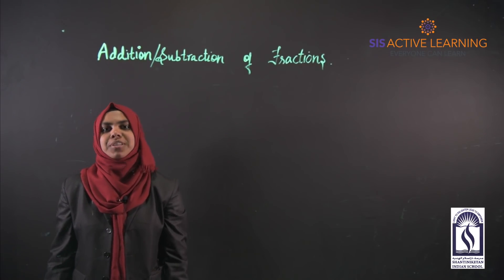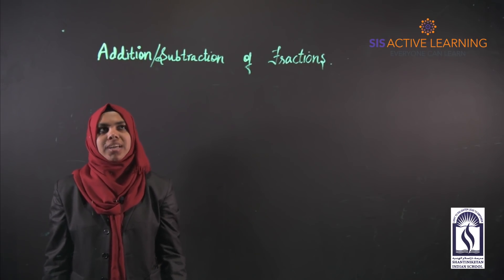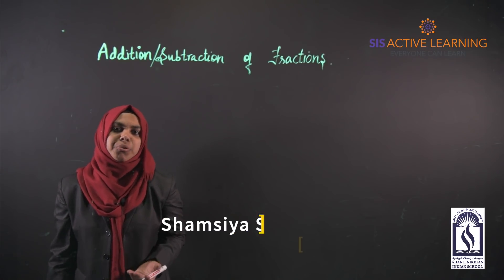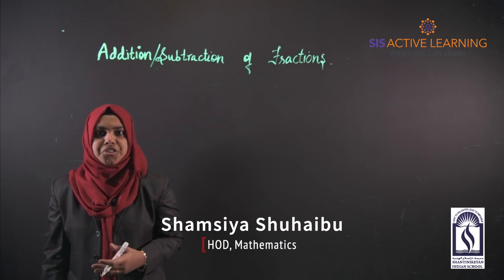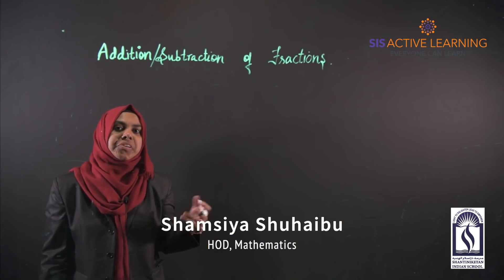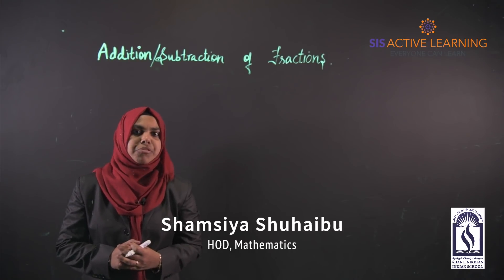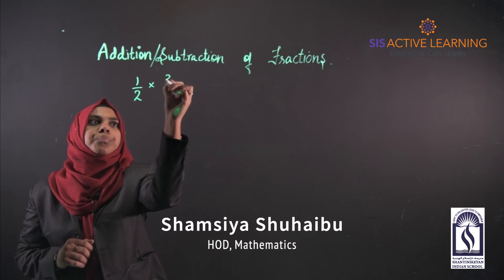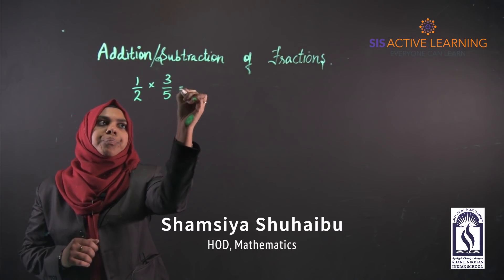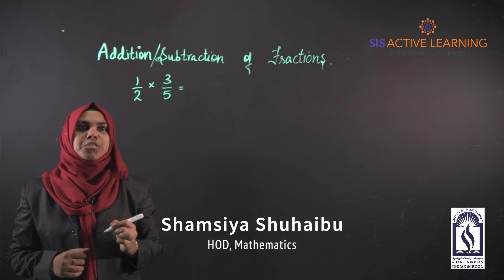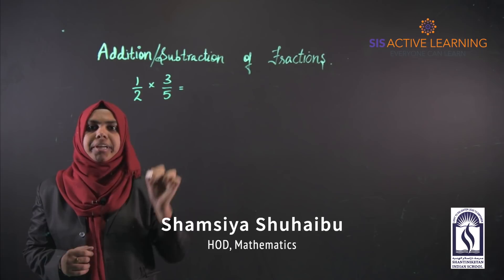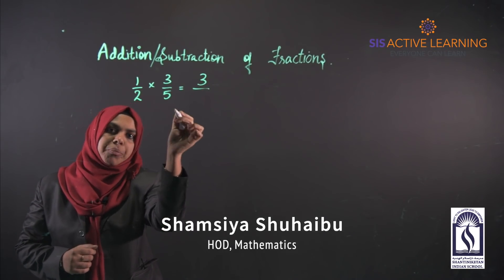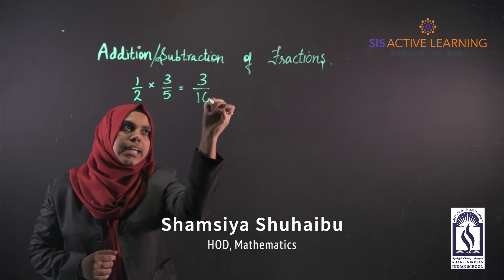Hello students, today we will discuss the topic of addition or subtraction of fractions. Normally you get confused with multiplication versus addition and subtraction. I'll take one example for multiplication: 1/2 × 3/5. You multiply the numerator with the numerator — 1 × 3 = 3 — and the denominator with the denominator — 2 × 5 = 10.